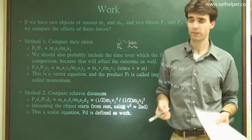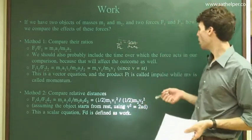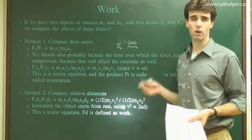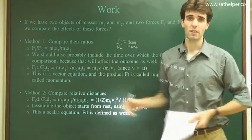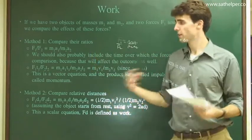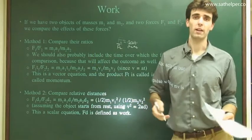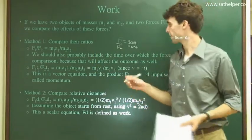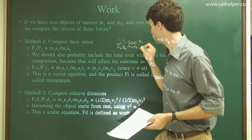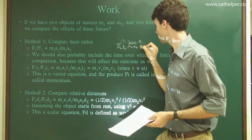But that's not the whole story, right? We should probably also include the time over which the force acts in our comparison because that will also affect the outcome as well. Let's say I apply a force on an object for 10 seconds. That force, the resulting change, the resulting motion is going to be much different than if I'd only applied the same force for one second. I'll also multiply each side by T1, T1, T2, and T2.